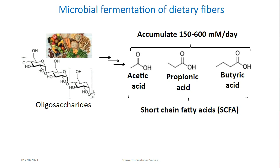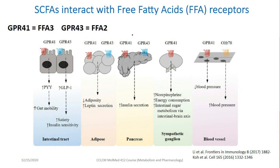Some of them can be used by colonocytes — for example, butyric acid is used as a source of energy — or via the portal vein they enter the liver, and from the liver they enter circulation. There are multiple mechanisms by which short-chain fatty acids impact the host. One such mechanism is interaction with three fatty acid receptors, FFA3 and 2, previously known as GPR41 and 43. Those receptors are expressed in multiple organs and tissues, such as the intestinal tract, adipose tissue, pancreas, neuronal cells, and blood vessels. By interacting with short-chain fatty acids, they impact multiple functions, for example gut motility, insulin secretion, energy expenditure, and blood pressure.